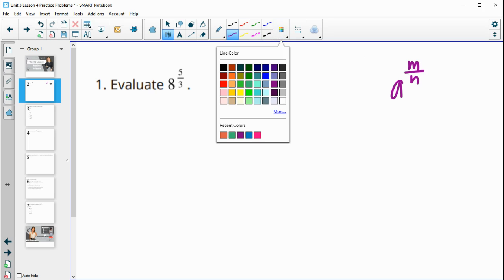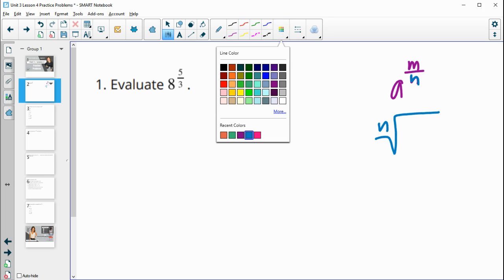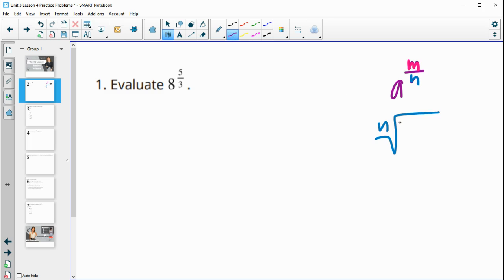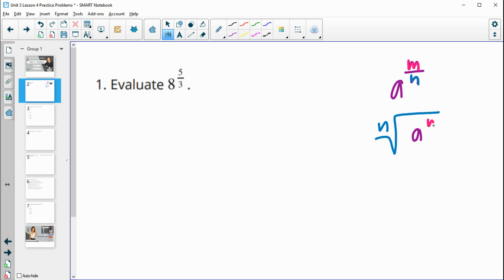So this rule says that this bottom number is actually the root, and then this top number is the exponent. So we would have the nth root of a to the m power. So the bottom is the root and the top is the exponent.